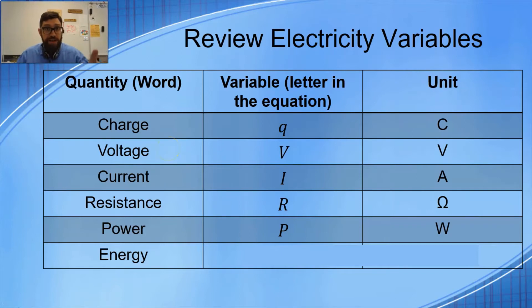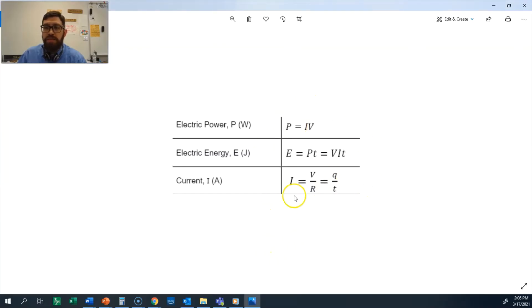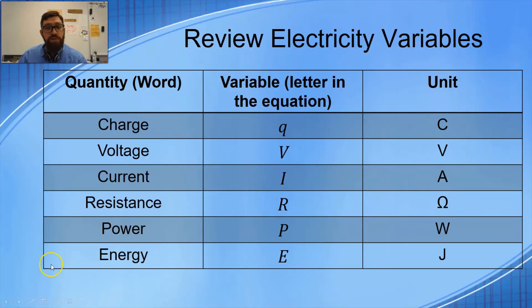Lots of units for energy. For us, when we do our calculations, we're going to use joules. Capital E is the variable for energy, and capital J is the unit. Notice that our variables - there's only one lowercase variable, and that's lowercase q for charge. The rest of them, if you put them in the right order, spell out the word 'verpy.' Maybe that was on accident, maybe I did that on purpose. But this is a good slide to memorize. These are the variables that you find in these equations, which we will use on the next problems, which I will solve for you in the following video.